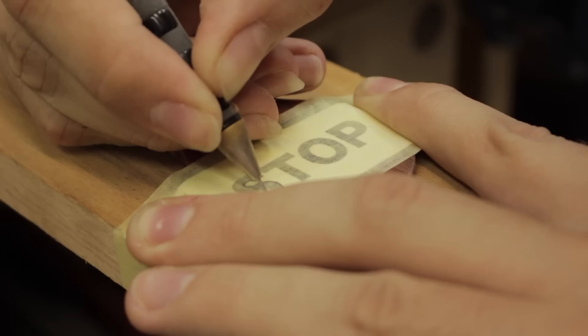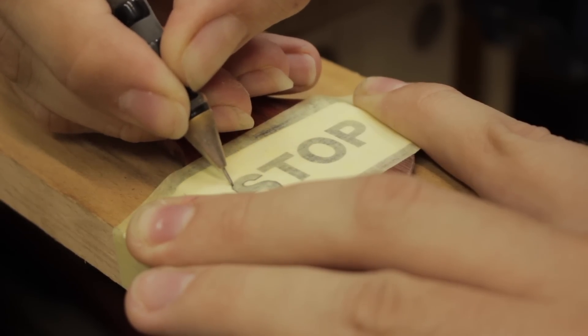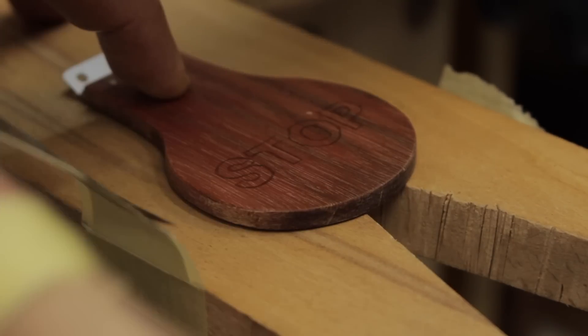We used what is called the indigo paper or copying paper. So we printed the stop sign and then Maurice copied it onto the wood.